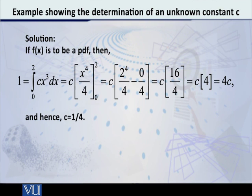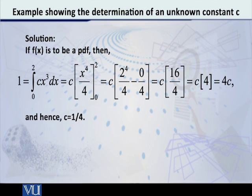Obviously c is a constant so it will come outside. When you apply the upper limit, 2⁴ over 4 minus the lower limit 0⁴ over 4 — that means 2×2×2×2 = 16, and 16 over 4 is equal to 4, while the lower limit gives 0. So 4 minus 0 equals 4, giving us the final equation: 1 = 4c, and therefore c = 1/4.